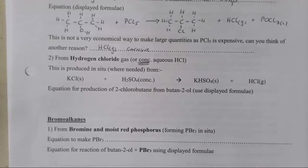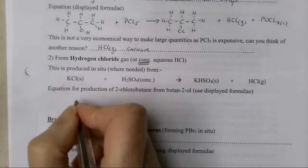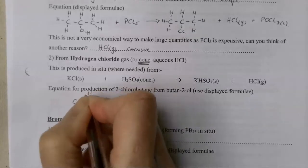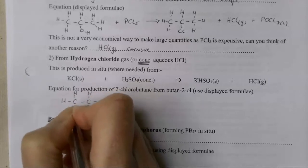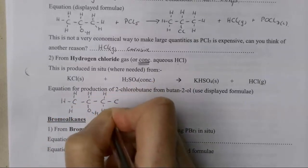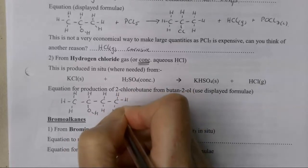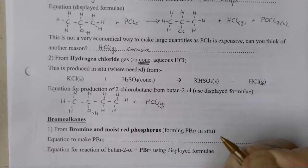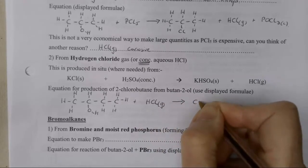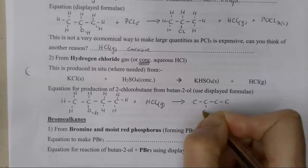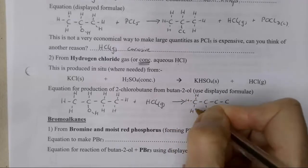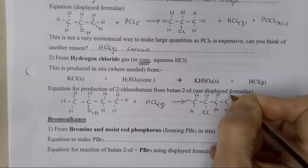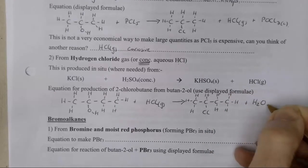We're going to make 2-chlorobutane using this method. I'm going to start with butan-2-ol because wherever I want the chlorine to end up, that is where my OH group must start. If I wanted 1-chlorobutane, I would need to use butan-1-ol. I'm adding hydrogen chloride gas and I replace the OH with the chlorine. I've now got my 2-chlorobutane. This time, the only other product is water.